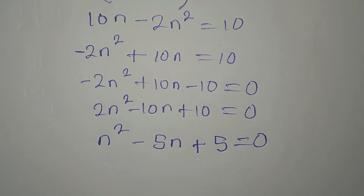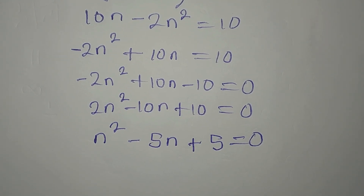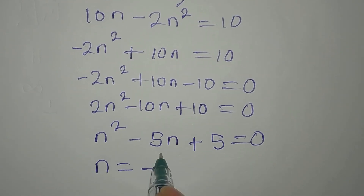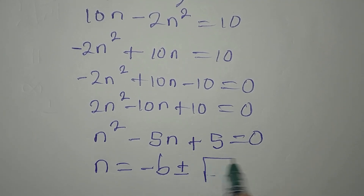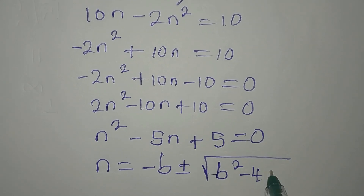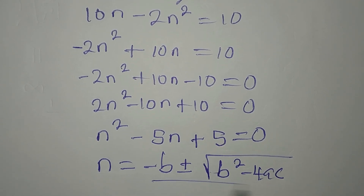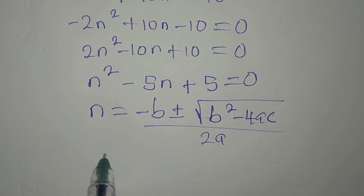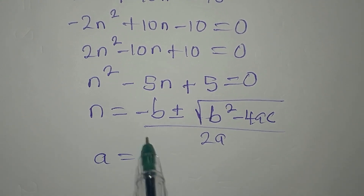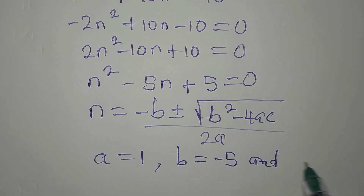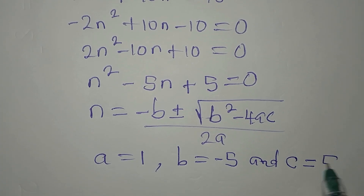We are going to use the quadratic formula method to solve this. N equals minus B plus or minus square root of B squared minus 4AC, all over 2A. Remember that our A is 1 (the coefficient of N squared), B is minus 5, and C is 5.